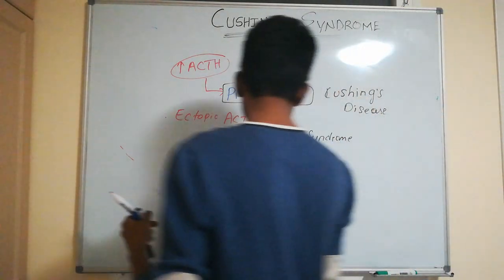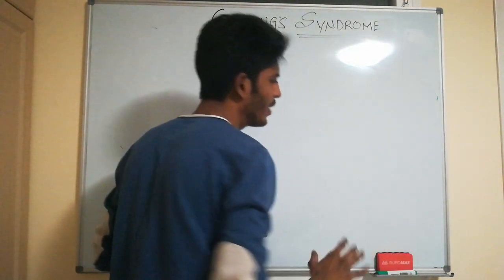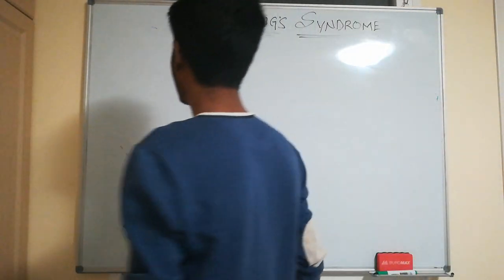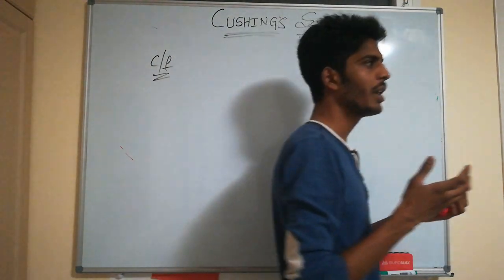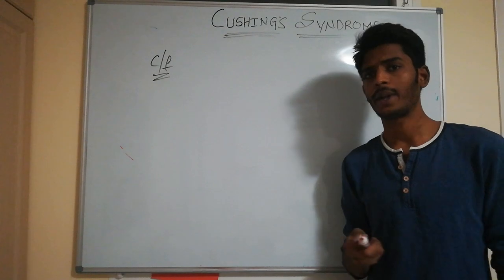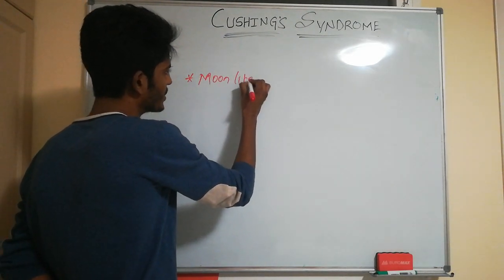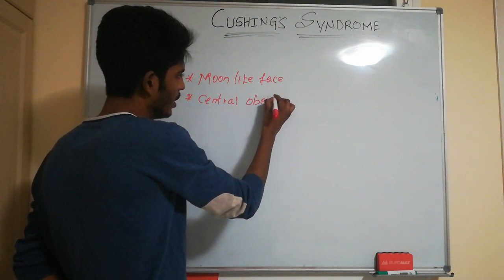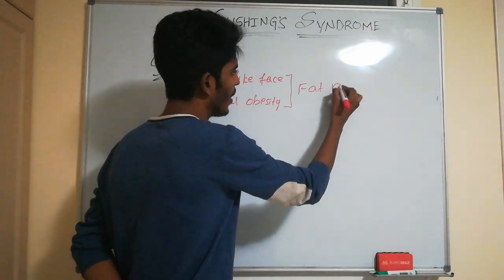Now let's look at clinical features. In Cushing syndrome, there is an elevated level of cortisol. These patients present with a moon-like face and central obesity, both due to fat redistribution.